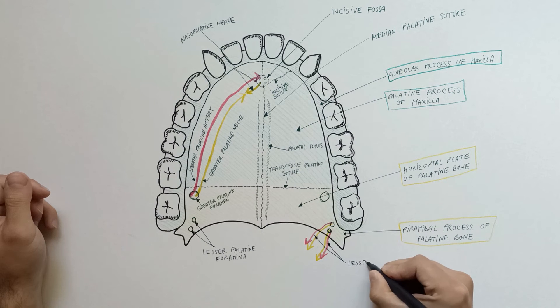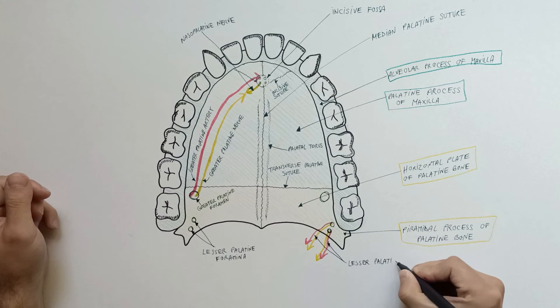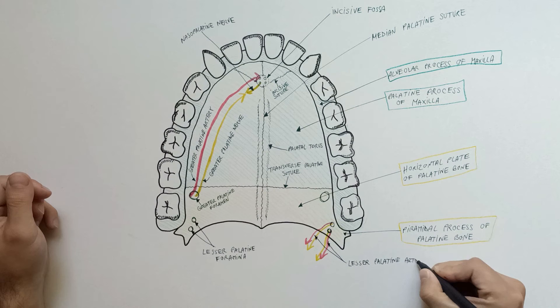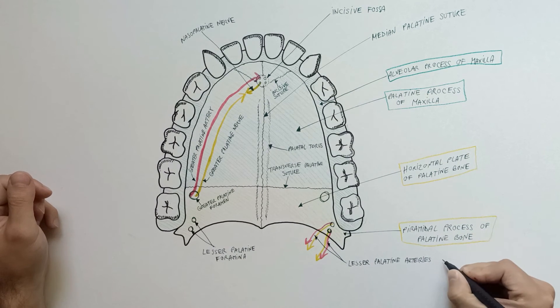These foramina provide passage to the lesser palatine arteries and nerves which, after their emergence, turn backward and downward to supply the soft palate.